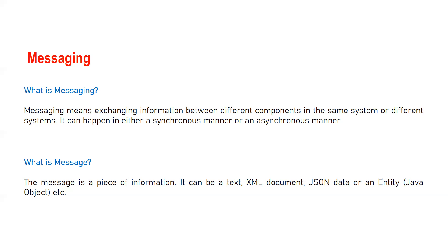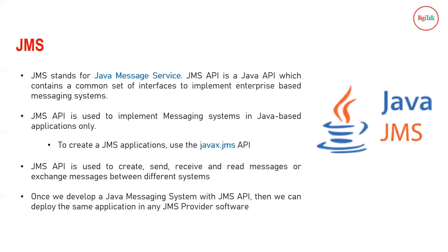A message is a piece of information — such as the data in an invoice. It can be text, an XML document, JSON data, or a Java object. These are the different ways data can be exchanged from one application to another in terms of programming.